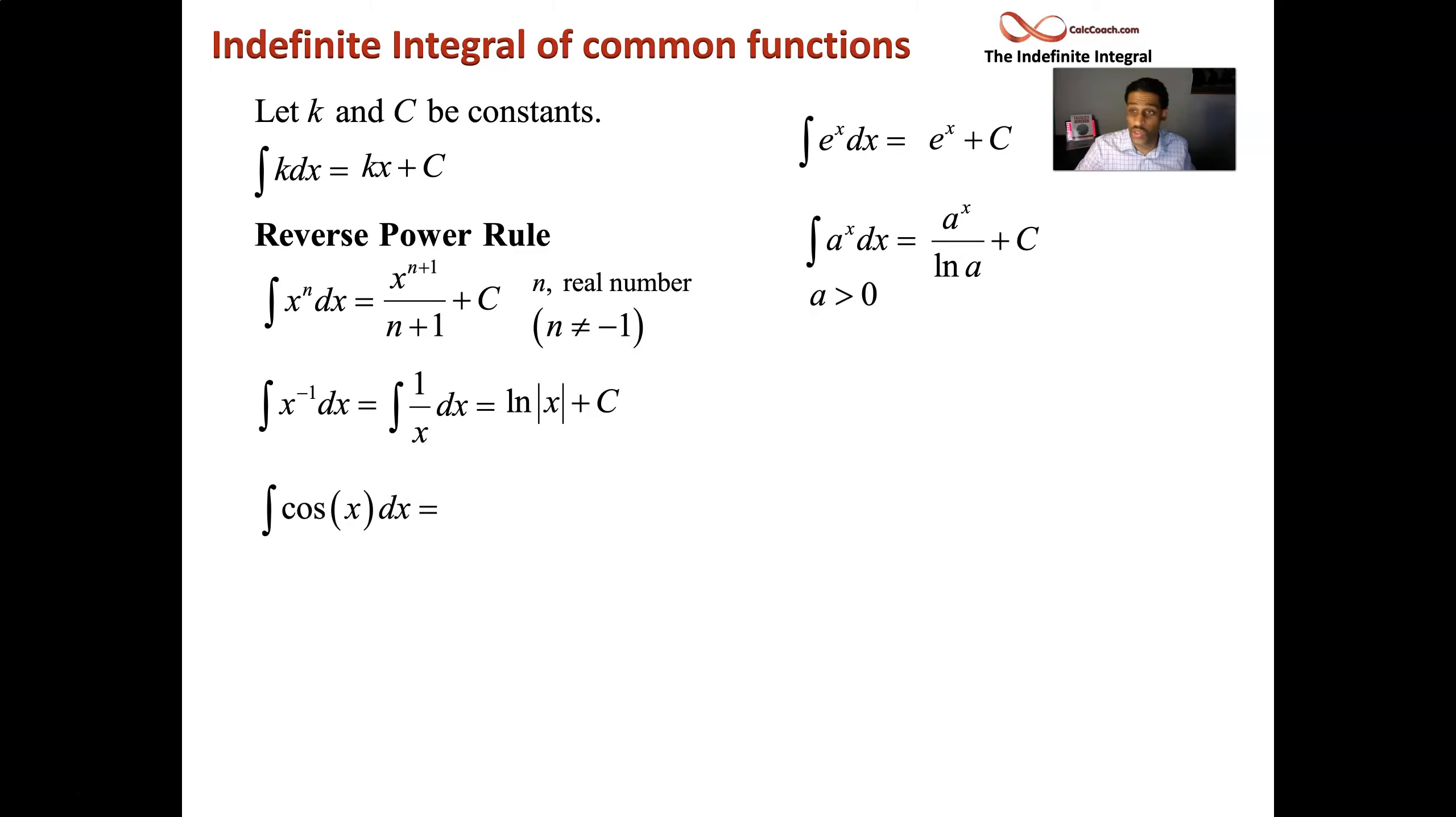Cosine x gives sine x. Sine x gives negative cosine x. Secant squared x gives tangent x.